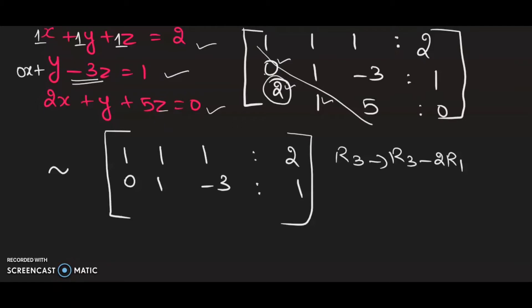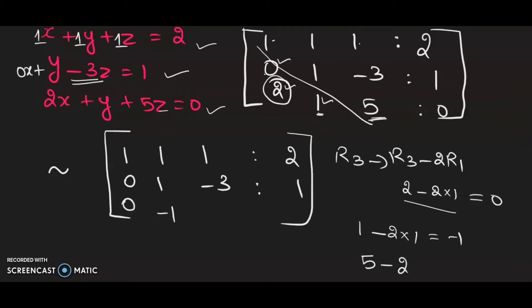The element in row 3, column 1 is 2, so I apply R3 → R3 − 2R1. Computing each entry: 2 − 2(1) = 0, then 1 − 2(1) = −1, then 5 − 2(1) = 3, and 0 − 2(2) = −4. So the updated row 3 is [0, −1, 3, −4].